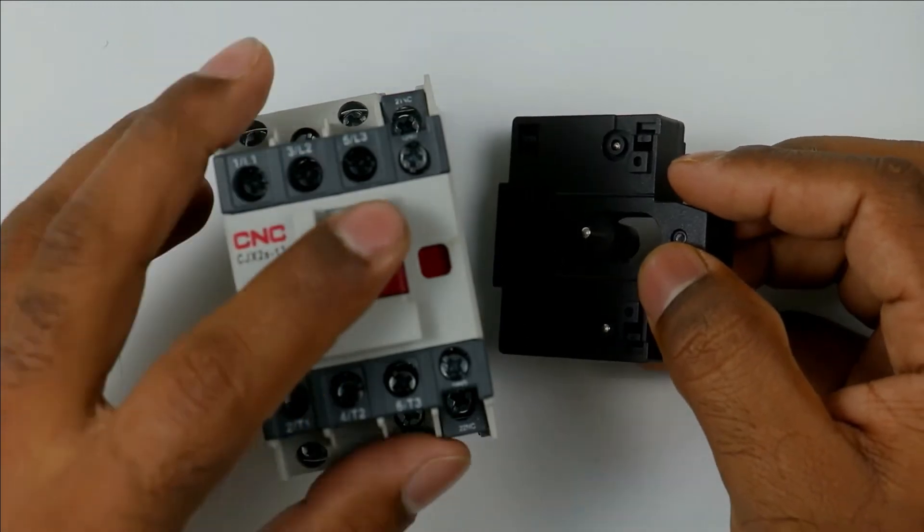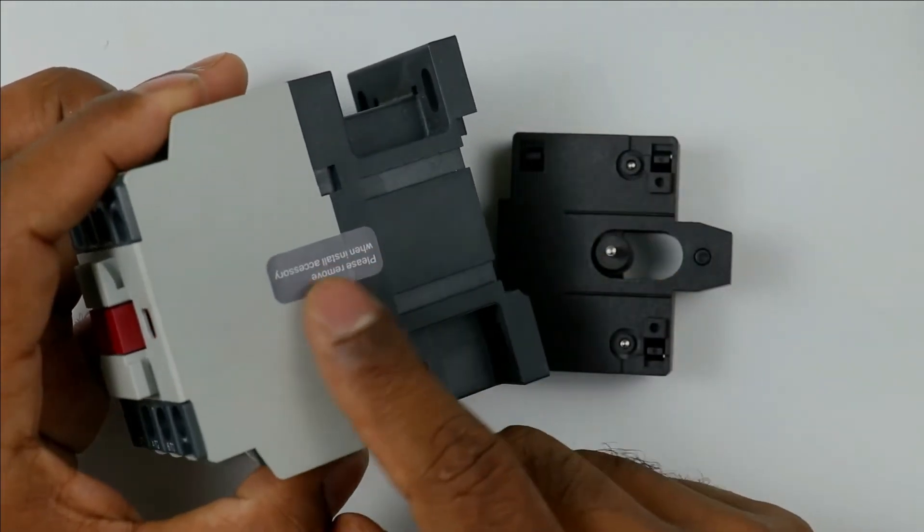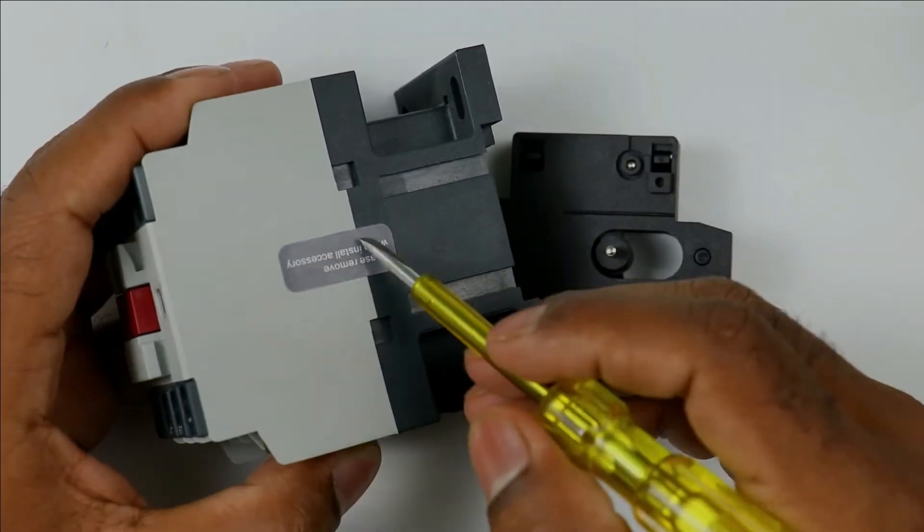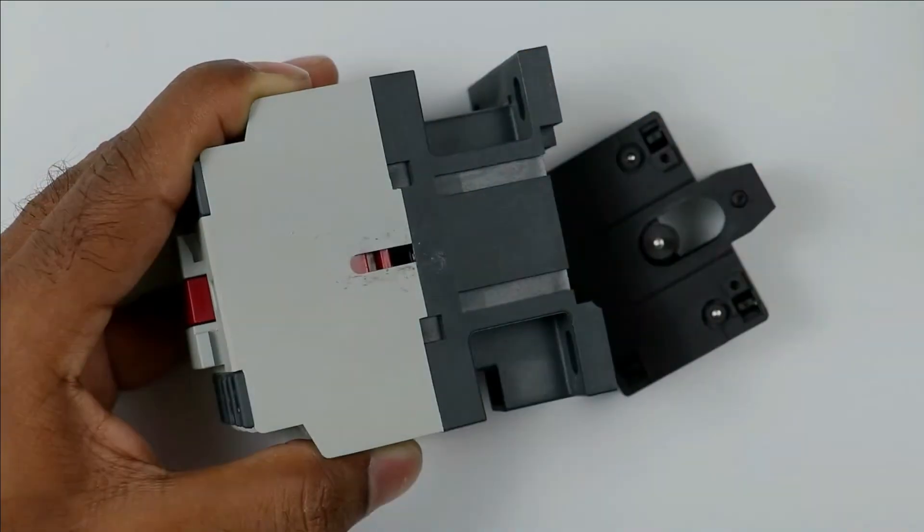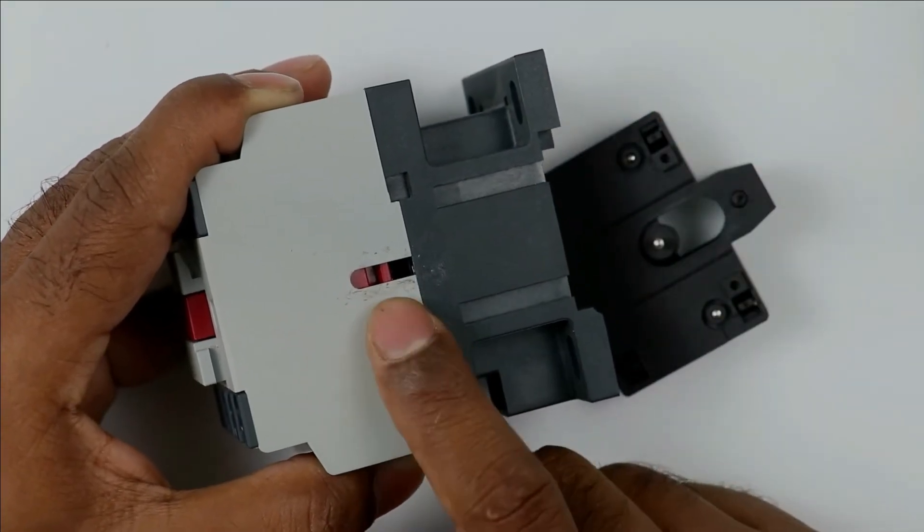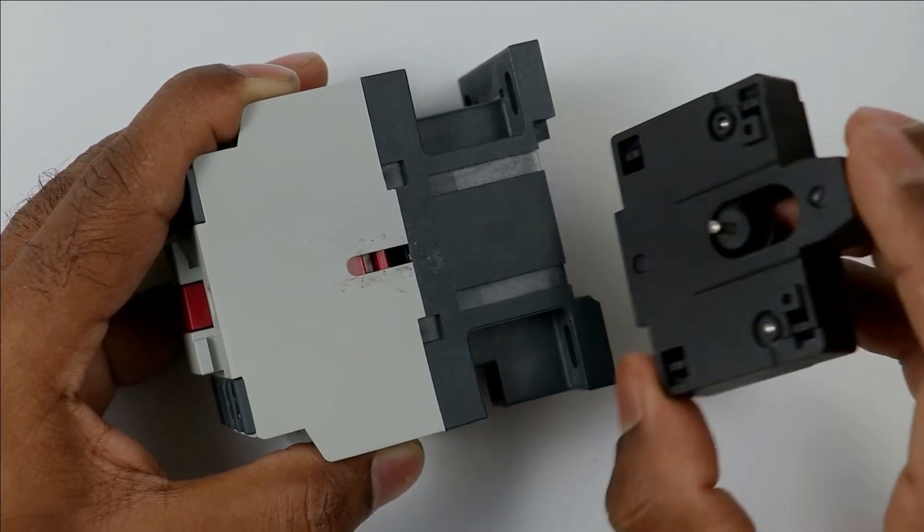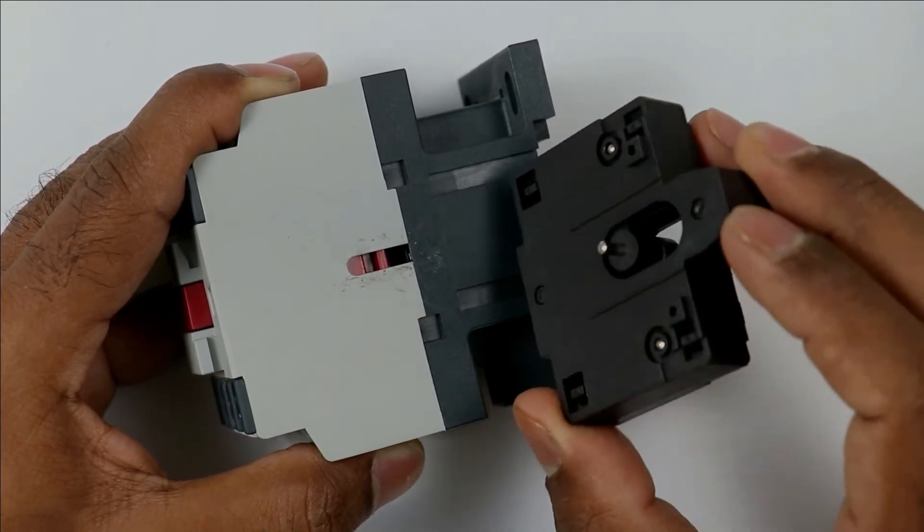In this contactor if I look at this side you can see a cover is there. First remove this cover. When you remove this you will see something like this. Now we will have an option here to mount this contact. There is a simple way to mount this.